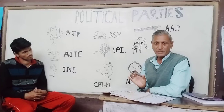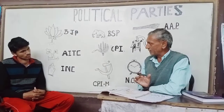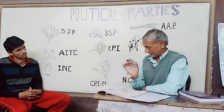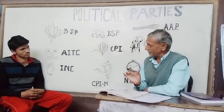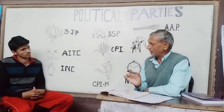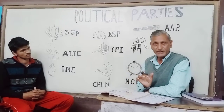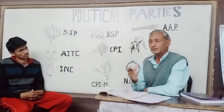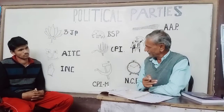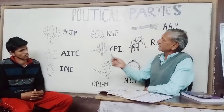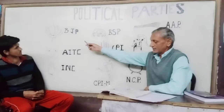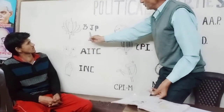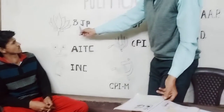A national party or a state party is given a particular symbol by the Election Commission and their candidates can fight elections on that given symbol. We have some symbols here — let's cover all the parties one by one.